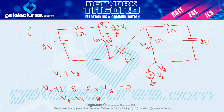इन last 2-3 questions से एक चीज़ identify हुई: अगर point-wise voltage given हो, तो पहले उसे ground form (plus-minus) में लिखो। यह करने के बाद question ground-to-ground KVL तक ही रह जाता है — बाकी सारे पुराने concepts ही apply होते हैं।